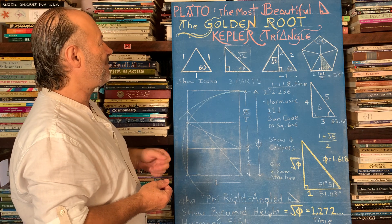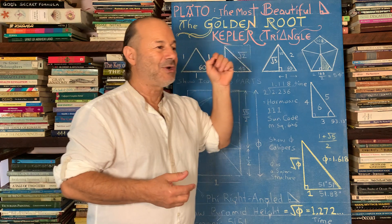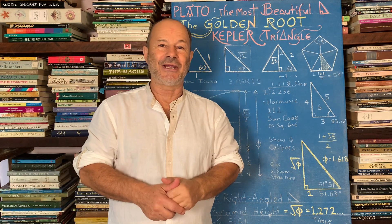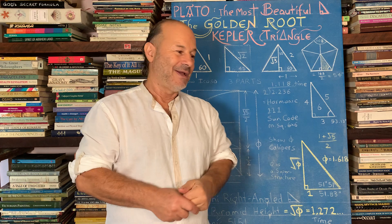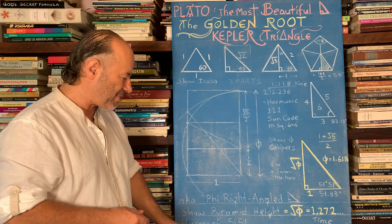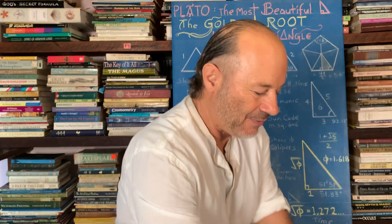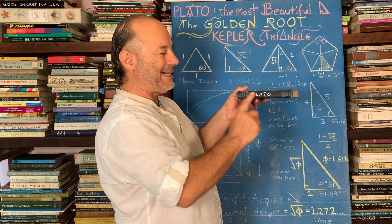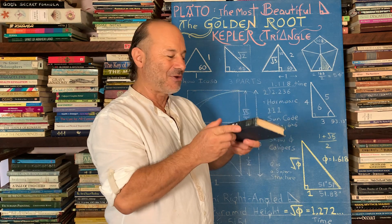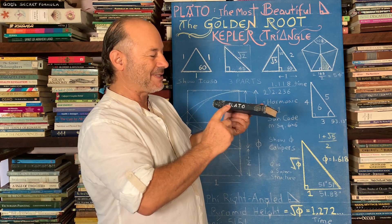Plato asked a very important question — he wanted to know, and to teach, what is the most beautiful triangle in the world. It comes from a quote where he says: one, two, three — but where is the fourth, my dear Timaeus? In one of Plato's books called the Timaeus — which I don't have here, I lent it out, so I shouldn't lend my books out — I'm missing my most important book on the Timaeus.